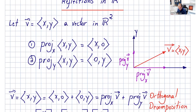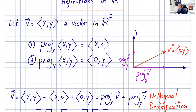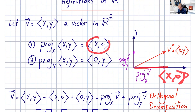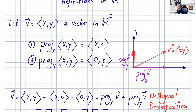Let's say we have a vector with the components x, y in R2. This is our vector v with components x, y. The projection of vector v onto the x-axis gives us the vector (x, 0). The projection of v onto the y-axis is the vector (0, y).